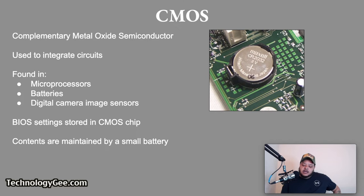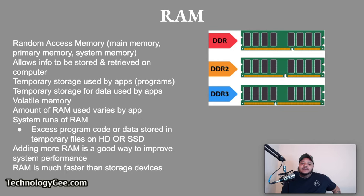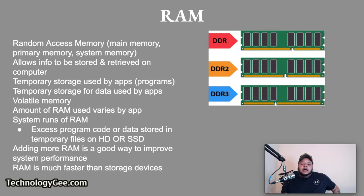Next we're going to talk about RAM. RAM stands for Random Access Memory, also known as main memory, primary memory, or system memory. It is a hardware device that allows information to be stored and retrieved on a computer. RAM is temporary storage used by apps run by the CPU, and also temporary storage for data being used by those apps. The contents of RAM vanish when the system is turned off — this is known as volatile memory — so changed and new data must be saved to a permanent storage device such as a hard drive.